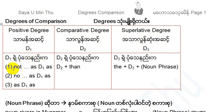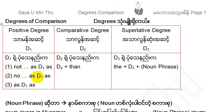D1 pattern: no as D1S, no as D1S, as D1S. D2 pattern: D2 plus than.